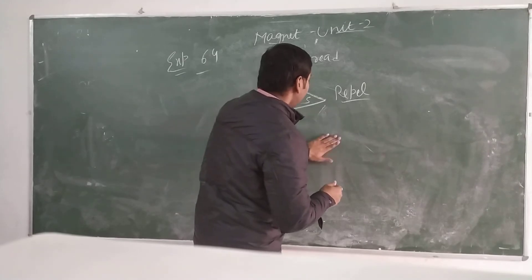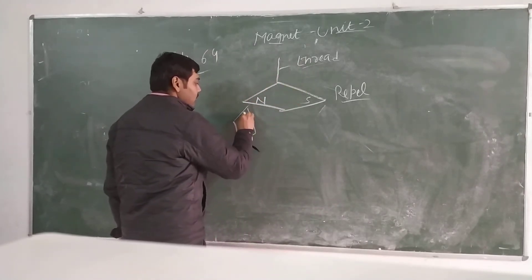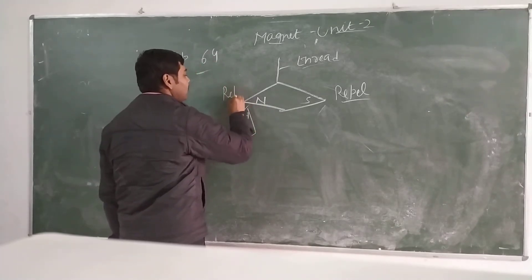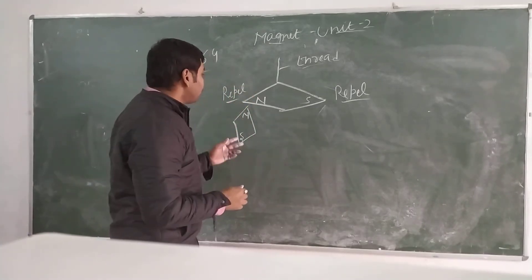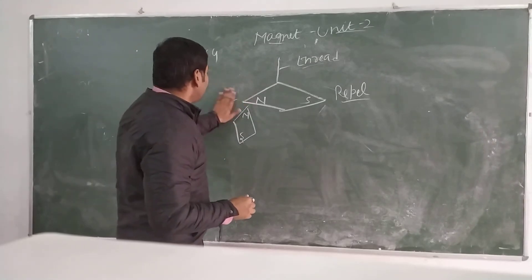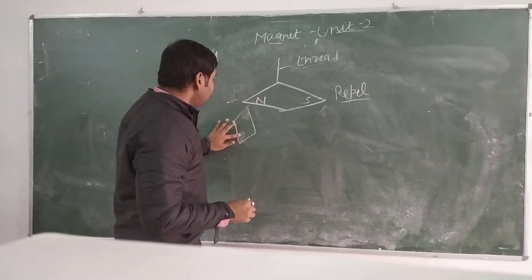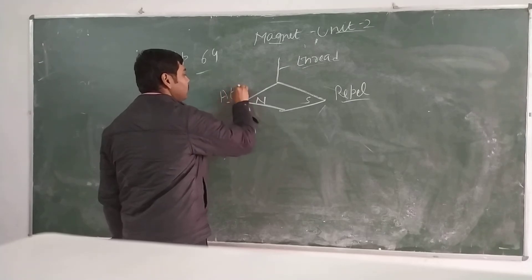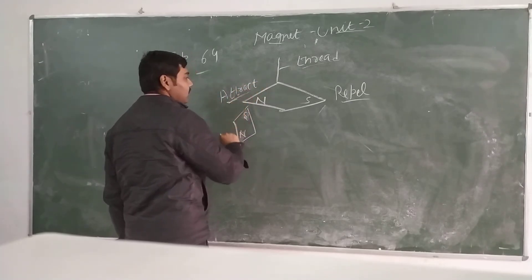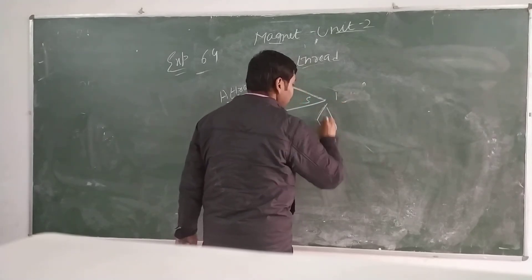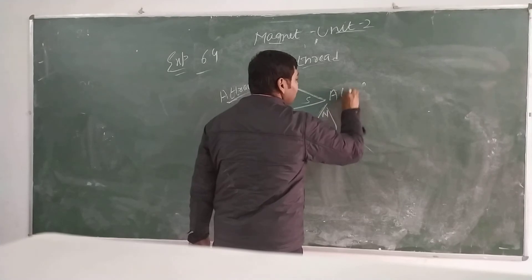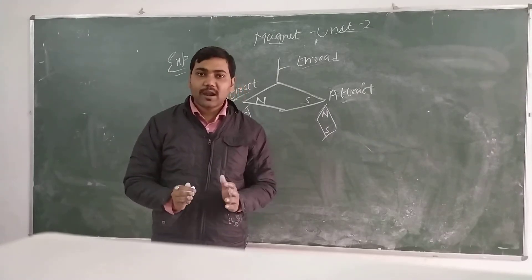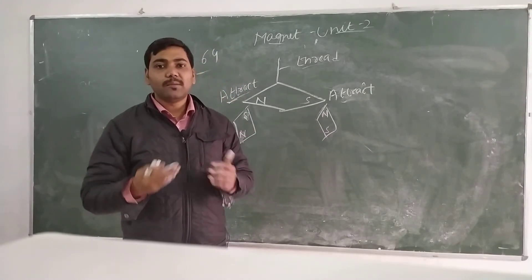In the second case, bringing the north pole of one magnet closer to the north pole of another, we again observe that they repel each other. But when the south pole of one magnet is brought closer to the north pole of another, they get attracted. This proves that different poles of a magnet attract each other, whereas same poles of a magnet repel each other.